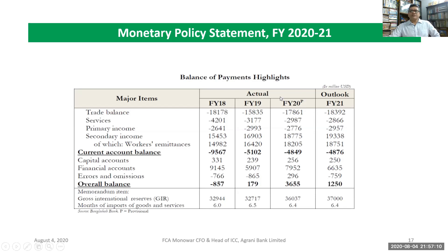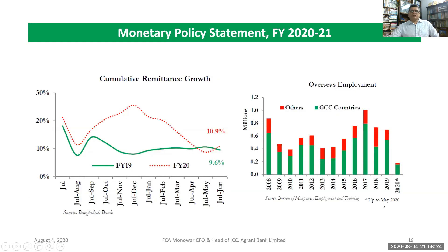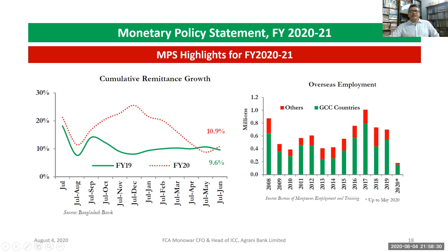Balance of payments highlights for fiscal year 2020 actuals: current account balance is minus 4,849 million USD, overall balance is positive 3,655 million USD. The outlook projected for fiscal year 2021 is a current account balance of 1,250 million USD. Months of import coverage for goods and services is 6.4 for fiscal year 2020, and the same 6.4 is projected for 2021. Cumulative remittance growth: fiscal year 2019 was 9.6%, fiscal year 2020 was 10.9%.